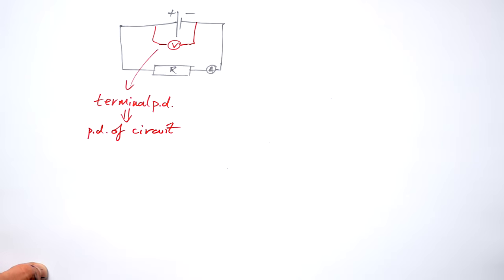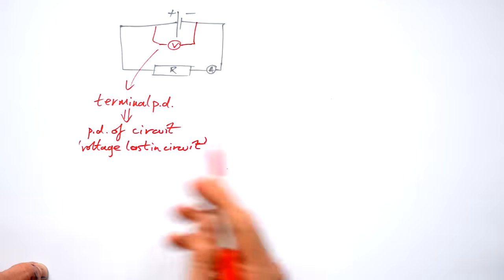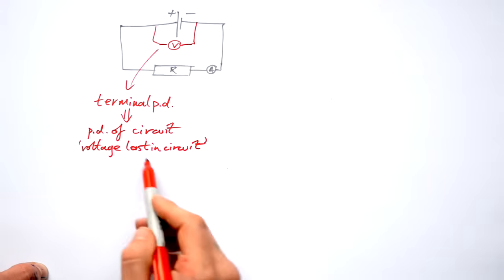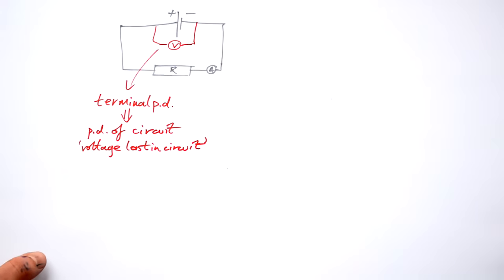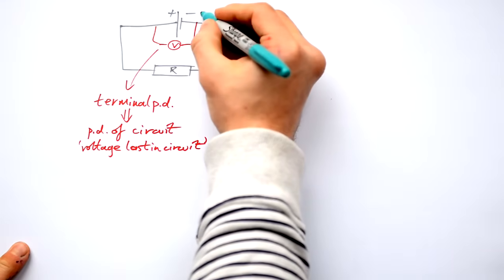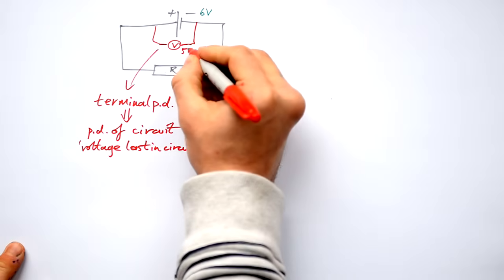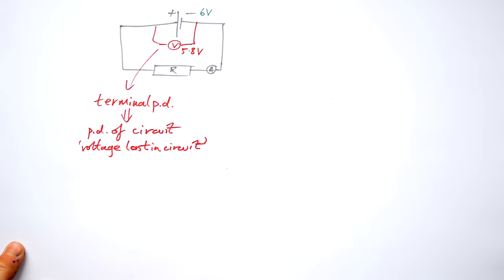Now you can think about it in terms of voltage lost in the circuit. The voltage is a difference already, but we can think about it in those terms to make it a little bit easier. Now let's say that this battery said on its six volts, but what we measure here on our terminal PD is actually 5.8 volts.